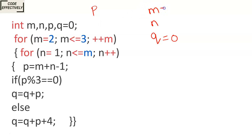Let's start with M equals 2 in the for loop. The examiner might confuse you with ++M and N++, because these both have the same significance when used in a for loop. They have different significance if used in an expression, but here we are using them in a for loop. So pre-increment or post-increment in a for loop means the same. Now we will come inside this for loop.